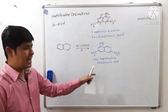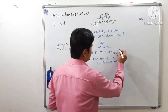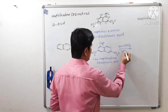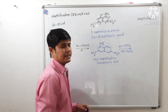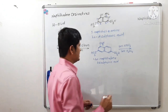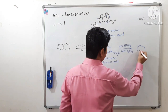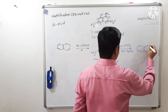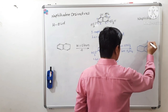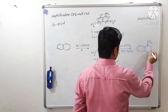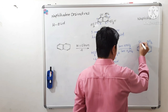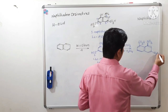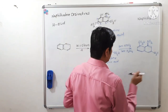Now, this 1,3,6-naphthalene trisulfonic acid is on nitration with concentrated nitric acid and concentrated sulfuric acid, giving a nitro derivative. There will be an introduction of a nitro group at this position, and the rest of the groups — SO3H, SO3H — remain as they are.